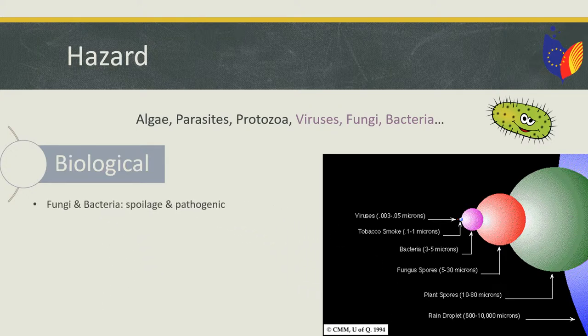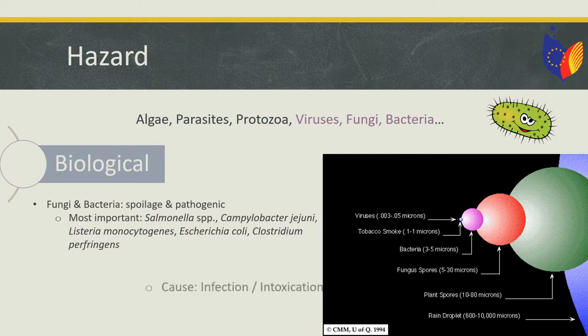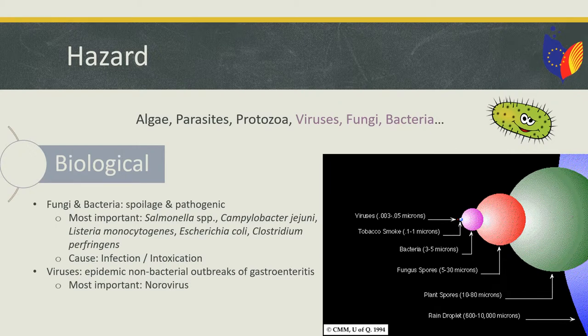Fungi and bacteria can be either spoilage or pathogenic microorganisms. The most important pathogenic bacteria are Salmonella, Campylobacter, Listeria monocytogenes, Escherichia coli, and Clostridium perfringens, and cause infection when they are ingested as a whole, or intoxication if their toxin is ingested. Viruses cause almost 90% of the epidemic non-bacterial outbreaks of gastroenteritis, and the most important virus on food is norovirus.